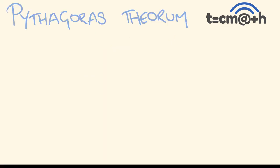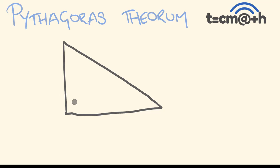let's launch into this video — Pythagoras' Theorem. Pythagoras' Theorem is applicable to a specific type of shape: a triangle. More specifically, it's a triangle that has a right angle in it — a right angle triangle. What Pythagoras' Theorem allows us to do is if we know at least two of the side lengths, we can use it to work out a third unknown side length. It comes up quite frequently in maths.